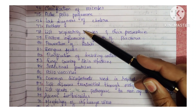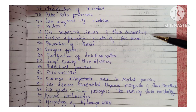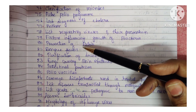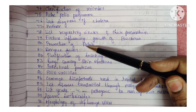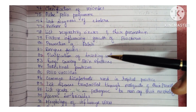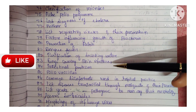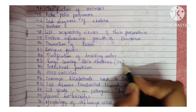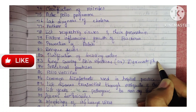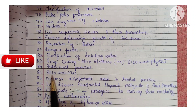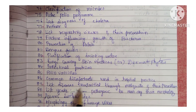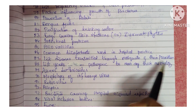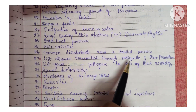Next: anthrax. List respiratory viruses and their prevention. Factors influencing growth of bacteria. Prevention of rabies — also asked as prophylaxis of rabies or post-exposure prophylaxis of rabies; all are the same. Dengue fever. Purification of drinking water. Fungi causing skin infection or dermatophytes — both are the same. Intestinal protozoa. Polio vaccines. Common disinfectants used in hospital practice. List diseases transmitted through mosquito and their prevention.